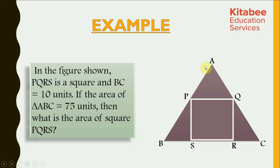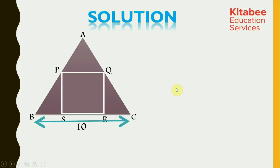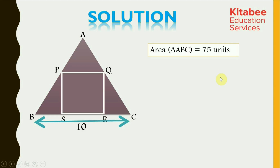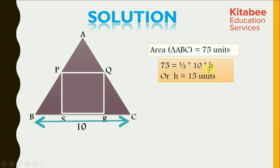In this problem, triangle ABC has square PQRS inscribed inside it, such that area of triangle ABC is equal to 75 units and length of BC is 10 units. We have to calculate the area of square PQRS. Area is equal to half of base into height. Area is 75 units, base is 10 units, so 75 equals half of 10 into H, which gives the value of H equal to 15 units. The height of this triangle is equal to 15 units.